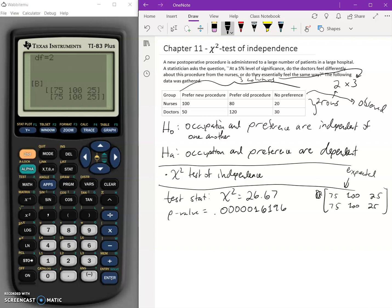What this means is that if we look back at this data of nurses and doctors, if there was no relationship between the nurses and doctors preference of the new procedure, we would have 75 in each of these. If there was no difference between the preferences between the nurses and doctors here, there would be 100 in the second column. And then over here would be 25 in each of them. So basically averaging these out.